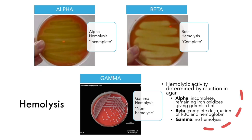The blood agar test will return a result of either alpha, beta, or gamma hemolysis. In alpha hemolysis, we have incomplete breakdown of the red blood cells. You can see that the agar itself turns a greenish color around the bacteria. The red blood cells are lysed open and hemoglobin is destroyed, but the iron is left behind. When the iron is left behind, it oxidizes in the presence of oxygen, which is why we get this greenish tint to the bacteria and some of the agar.